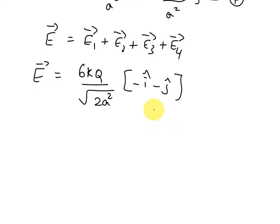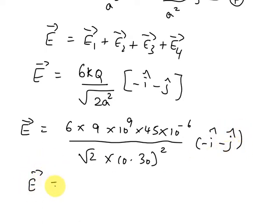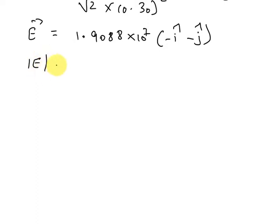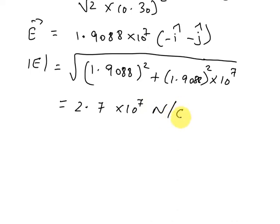Substituting the values: E vector = 6 × 9×10⁹ × 45×10⁻⁶ divided by √2 × (0.30)², giving 1.908² × (−î − ĵ). So E vector ≈ 10⁷ (−î − ĵ). Therefore, the magnitude of E = √(1.9088² + 1.9088²) × 10⁷, which simplifies to 2.7 × 10⁷ N/C.